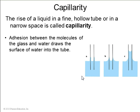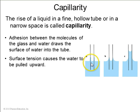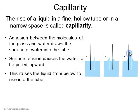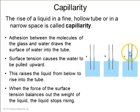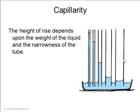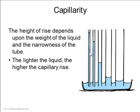Surface tension gives rise to capillarity. Water molecules adhere to the glass walls of a tube and that allows surface tension to draw the water up the tube. The liquid rises until the surface tension pulling it upwards balances the weight of the column of water, and the height of this rise depends on the weight of the liquid and the narrowness of the tube — as you get smaller and smaller tubes, capillarity will bring the liquid up to a greater height.